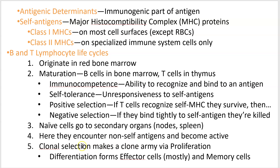During a process called proliferation, you make millions and billions of copies of cells that recognize that specific pathogen. Just one B cell gets exposed to one bacterium, it changes slightly, then divides over and over. All its offspring can also recognize that bacterium. Then through differentiation, they become effector cells — like antibody-producing cells — or memory cells that hang around for decades to protect you later.